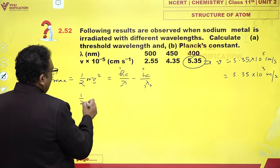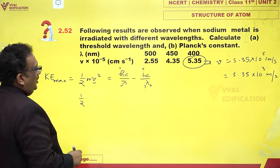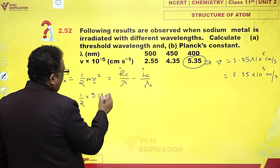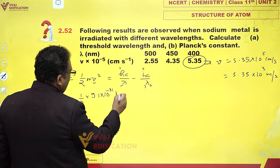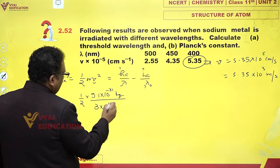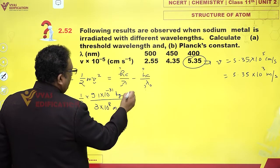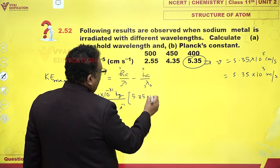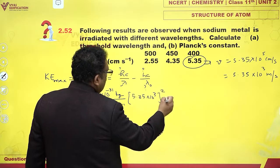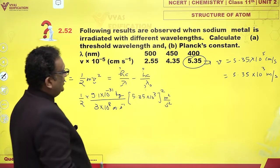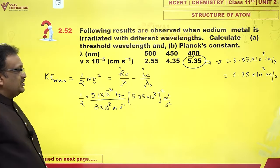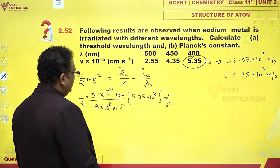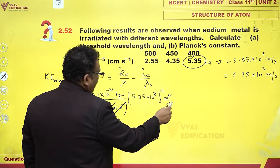I will just substitute in one case. Half into M, now I could just divide by C. The mass of electron is 9.1 into 10^-31 kg, and velocity of light is 3 lakh kilometers per second. V² is 5.35 into 10^3 whole squared meters per second, meters square per second square.